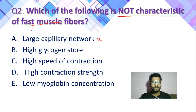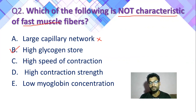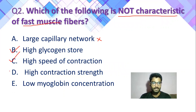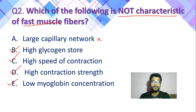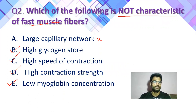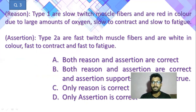Fast muscle fiber की properties में से: high glycogen store — यह fast twitch में होता है, इसे glycolytic oxidative muscle fiber भी बोलते हैं। High speed of contraction — यह भी सही है। High contraction strength — यह भी सही है। Low myoglobin concentration — यह भी इसमें रहता है क्योंकि limited amount of energy की जरूरत होती है to perform high intensity activity।